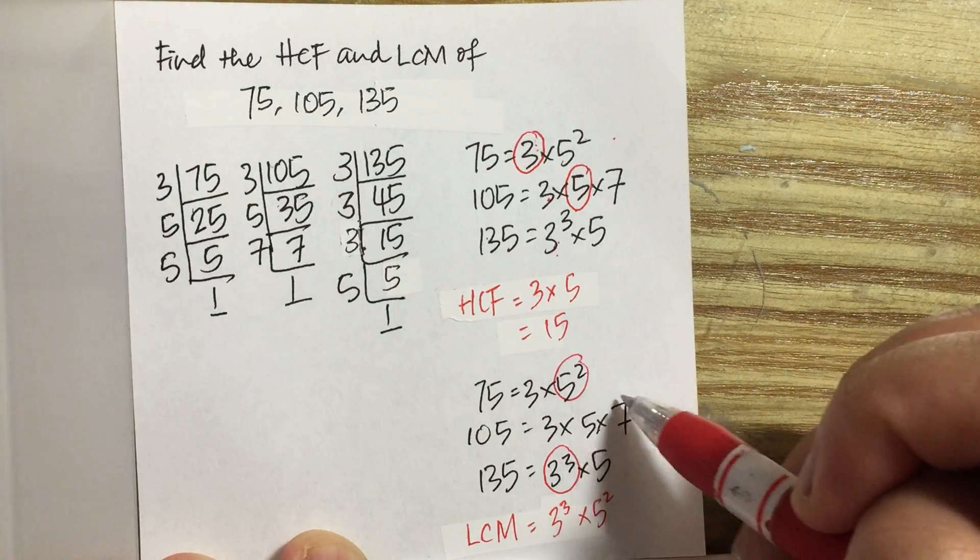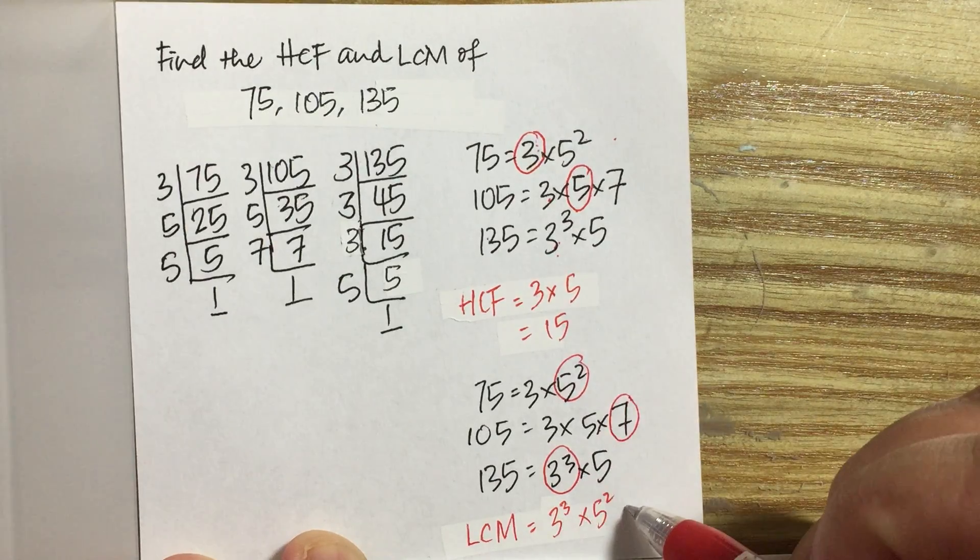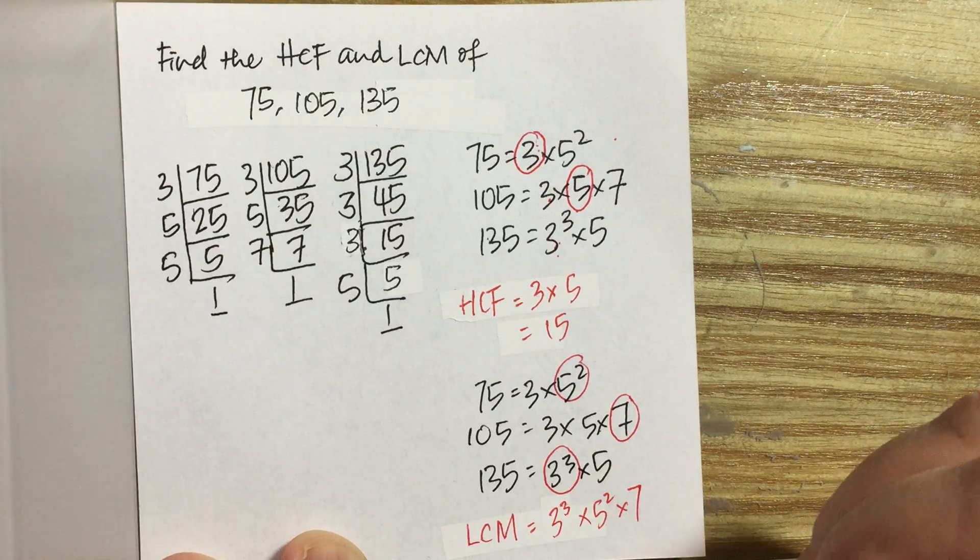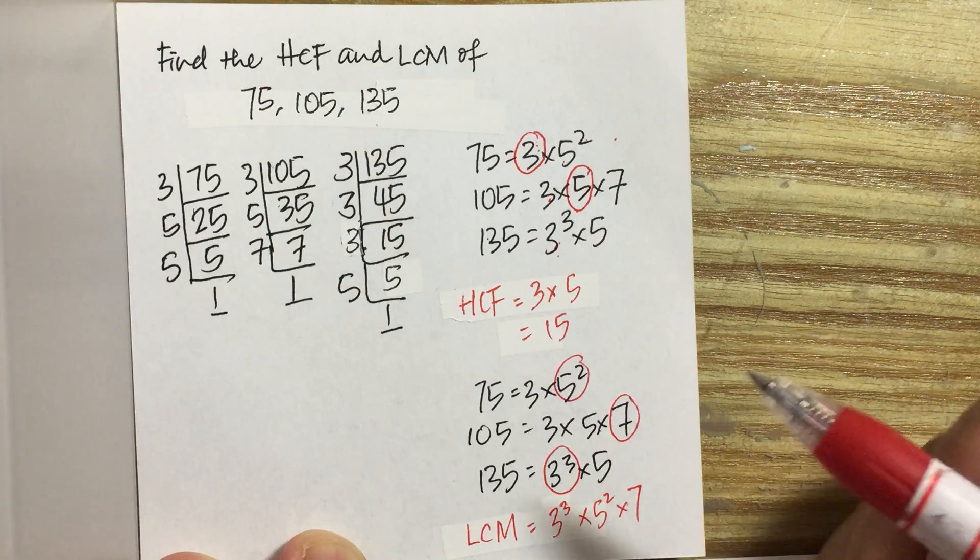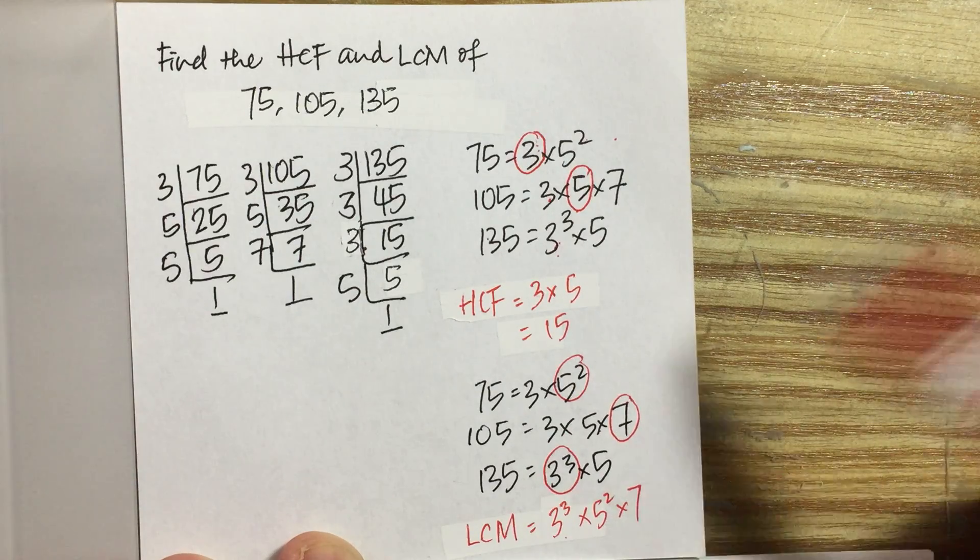Next, we have 7, and there isn't any other 7 around. So of course this one is the highest among all. Hence, LCM when expressed in index notation is 3 to the power of 3 times 5 squared times 7.